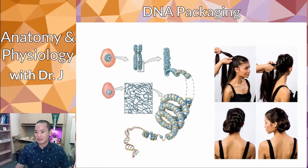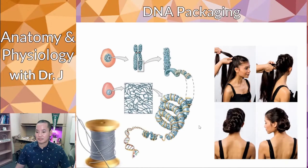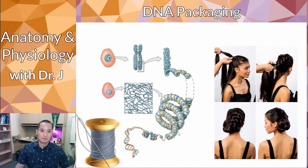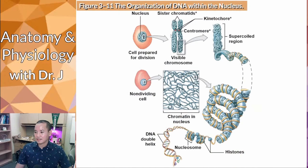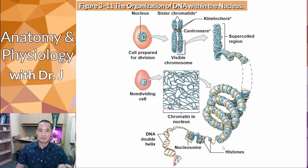These histone proteins help to wind up the DNA, and then if you wind and coil the DNA over and over again, you get structures called chromosomes. It's like taking a long, very thin structure and making it more compact and easier to work with.